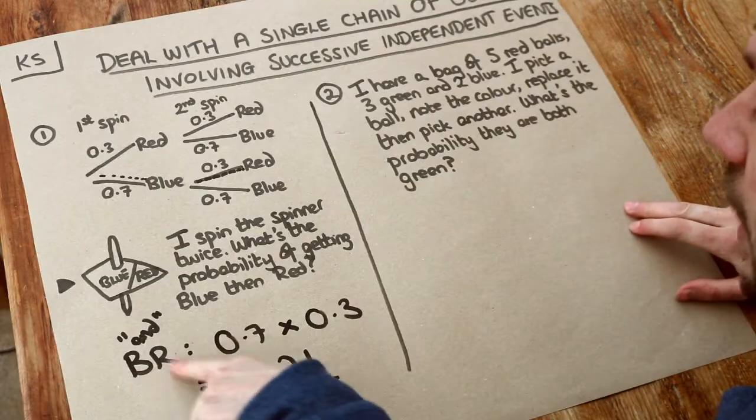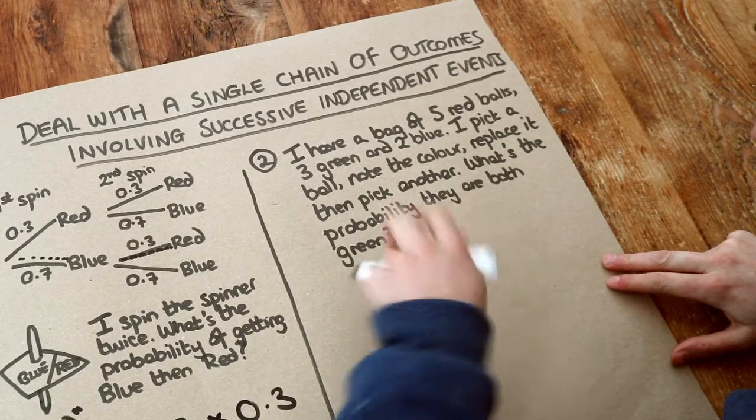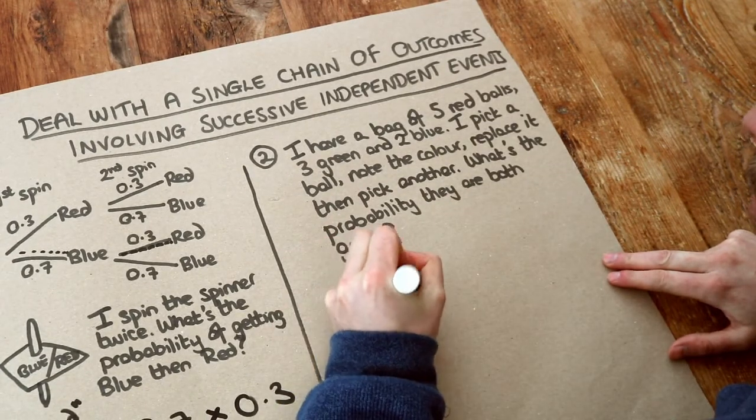So again, I'm just going to list out the sequence of outcomes I'm interested in. They are both green. So let's write green, green, and I'm just going to put a colon after.